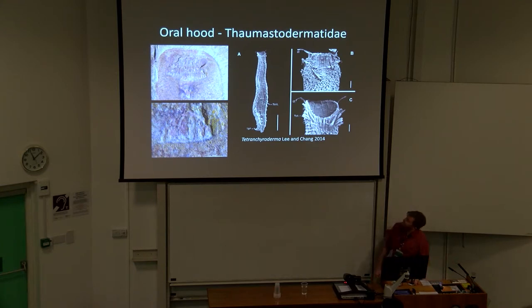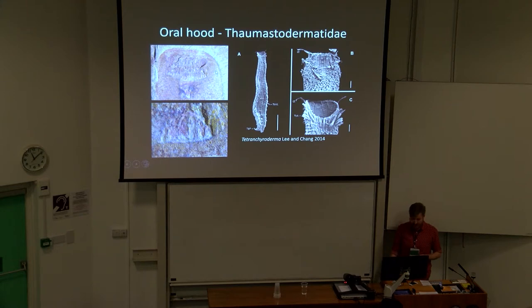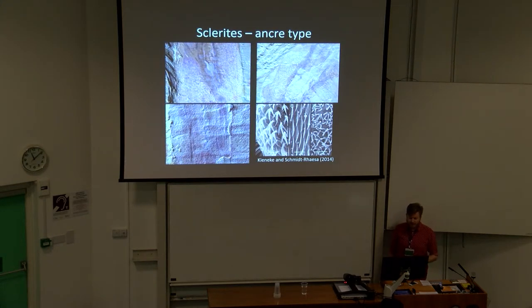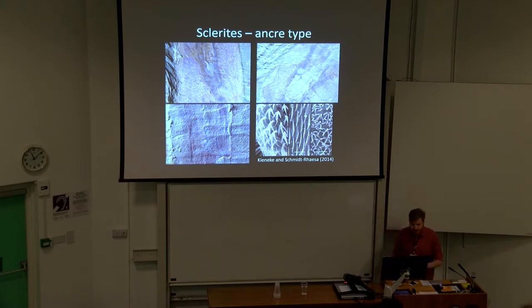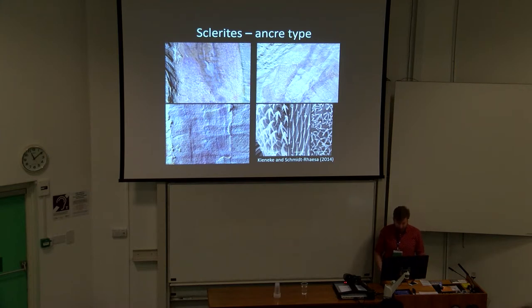This oral plate is similar to the oral hood seen in particular groups of gastrotricha. On the right-hand side is a thaumastodermatid, and you can see it has longitudinal ridges in the cuticle of the mouth that hold it open — very similar to what we see from this early Cambrian fossil from Chengjiang. The body is also covered in tiny sclerites, some of which are branched and forked, much like the anchor sclerites of extant macrodasyid gastrotricha, and in this taxon they occur all along the body.